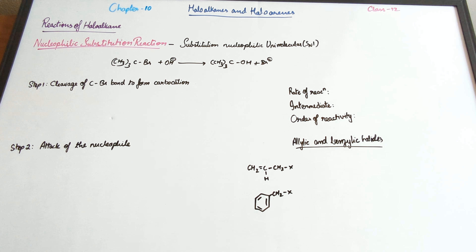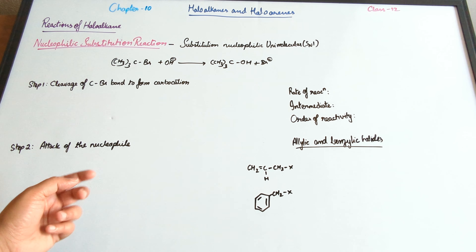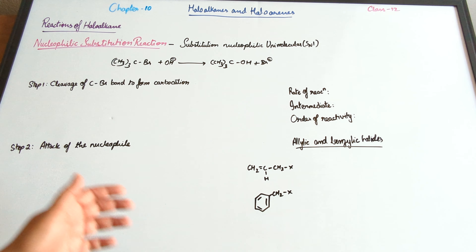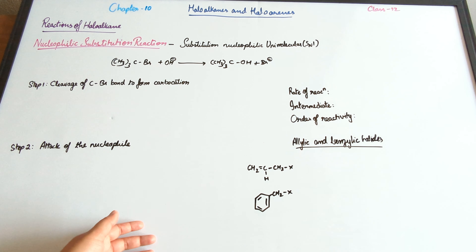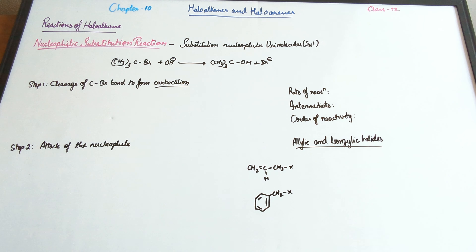So how does this reaction take place? Unlike SN2, this particular reaction takes place in two steps. The first step is the cleavage of the C-Br bond, and this leads to the formation of a carbocation.